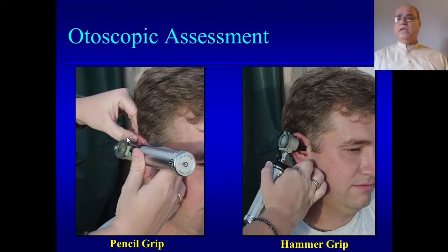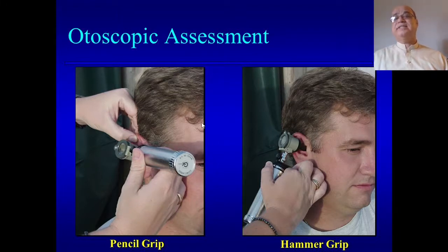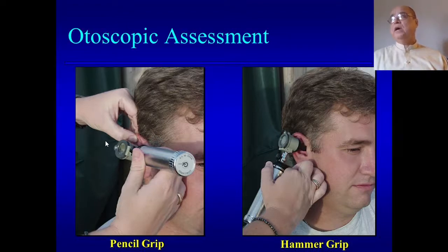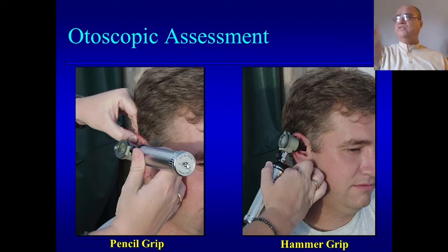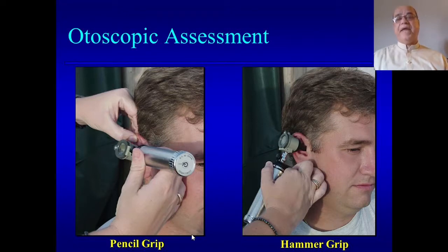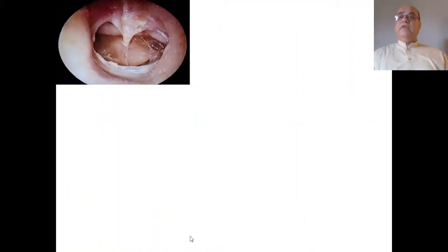Regarding how to hold the otoscope: beginners are asked to hold it just like a pen, as seen in the left-sided picture. There is another grip called the hammer grip, shown in the right-side picture, but as a student you are requested to use it like a pencil or pen, as the hammer grip can lead to forcing it inside and causing pain if there is inflammation in the external canal.